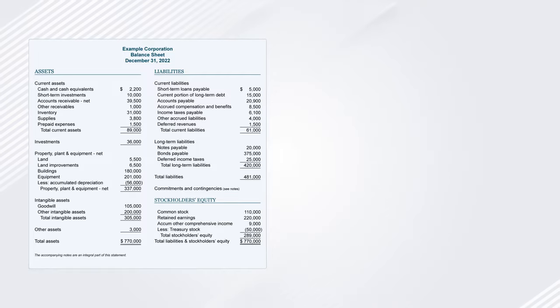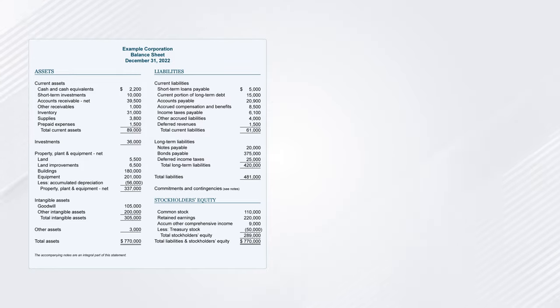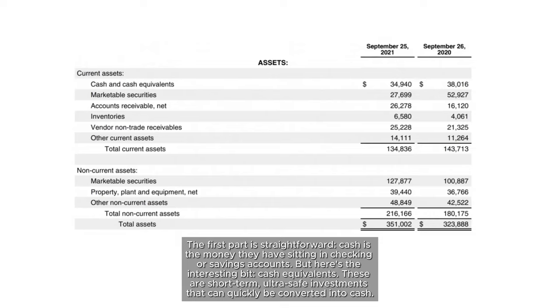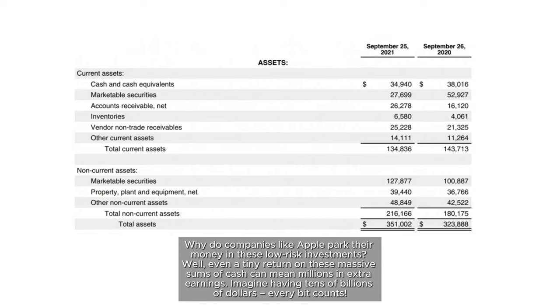Now that we have a solid foundation for why balance sheets matter, let's delve into a real-world example. We'll use Apple as our case study to explore their balance sheet line by line. The first line is cash and cash equivalents. Cash is the money they have sitting in checking or savings accounts. Cash equivalents are short-term, ultra-safe investments that can quickly be converted into cash. Why do companies like Apple park their money in these low-risk investments? Even a tiny return on these massive sums of cash can mean millions in extra earnings.